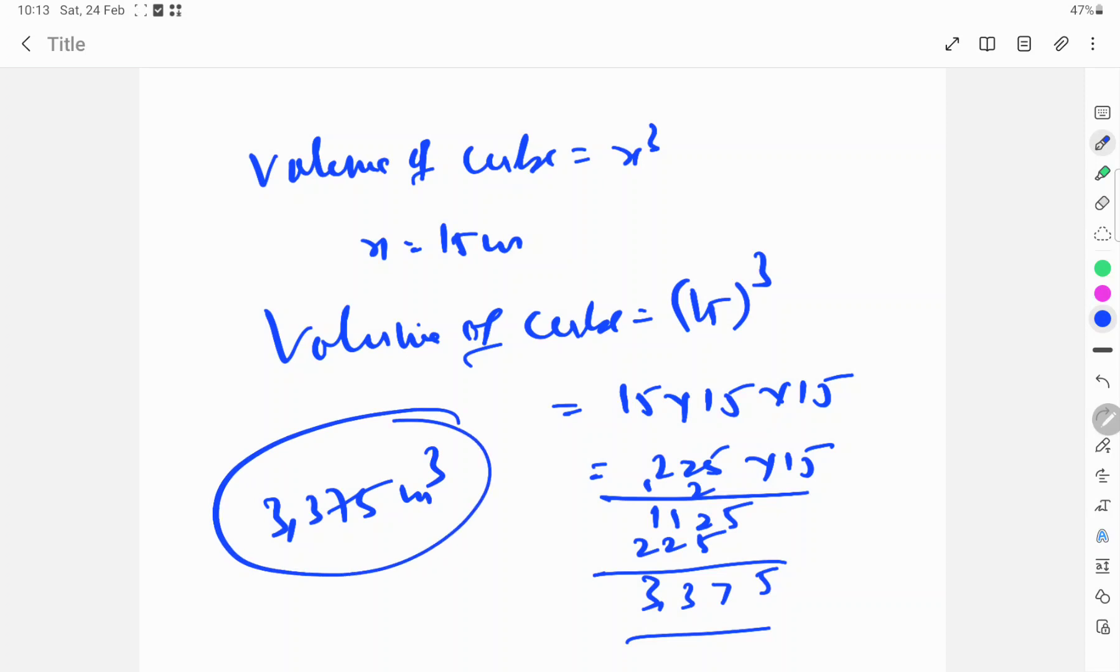Our value means our required volume is 3375 meter cube. So our required cube volume is 3375 meter cube. Please subscribe to Sims. Thank you for watching.